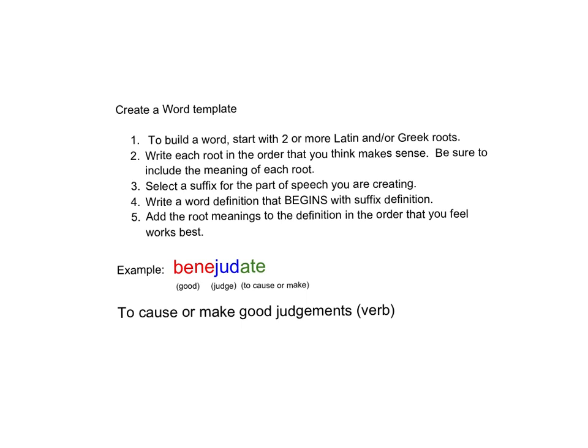To create your four words, follow this template. First, to build any word, start with two or more Latin or Greek roots. Find something fun to put together and make sure you know the meaning of each root. Write each root in the order that makes sense — since it's your word, think about which combination sounds better. Be sure to include the meaning of each root. Step three is probably the most important: select a suffix for the part of speech you're creating. If you're creating a verb, go to the list of verb suffixes. Then, number four, write a definition that begins with the suffix definition — your suffix definition is how you start your dictionary definition.